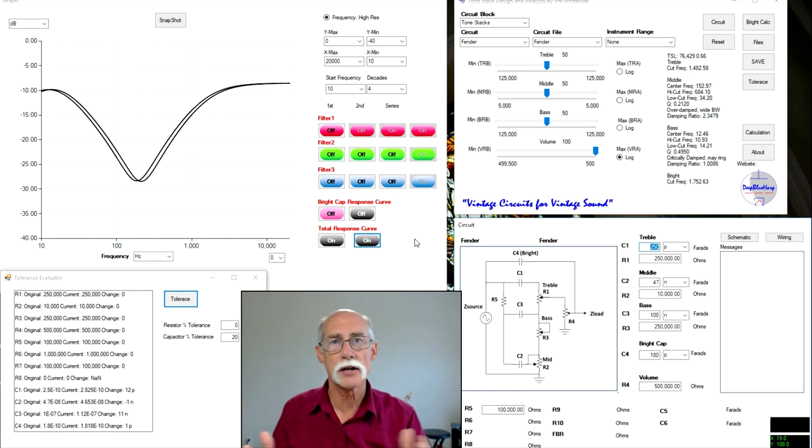And this wraps up why tolerance of a capacitor makes the biggest difference to a tone stack. Resistor, not so much. Take the time to buy capacitors that are at least plus or minus 10%. Stay away from the 20's. It's not a showstopper, but it will make your tube tone stack sound different than your friends. I hope you found this useful. Thank you for watching.